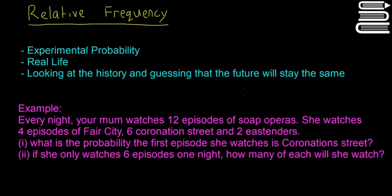We're going to start a new topic called relative frequency, and we're only going to have one question on it because it's quite a simple topic. Relative frequency, or it's sometimes called experimental probability, is a fancy term. In all the questions we've done previously, the question gave us all the information - the probability of this, the probability of that. But sometimes in real life you won't have the exact probabilities of something happening, so you'll have to guess. The idea is you look at the history of what happened and guess the future will be the same. That's the basic idea behind relative frequency or experimental probability.